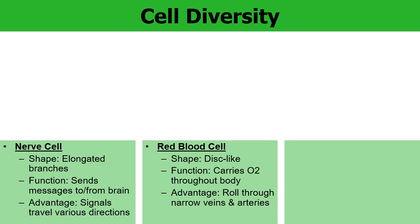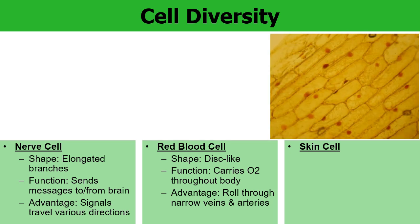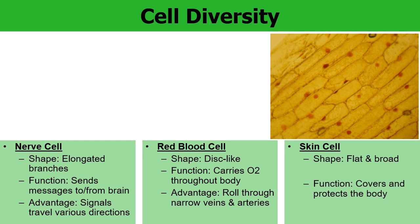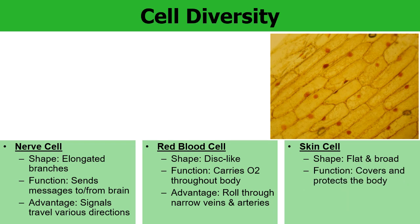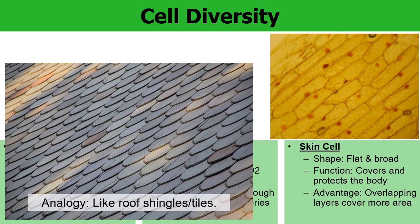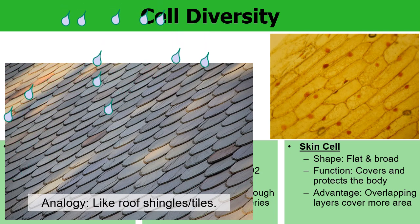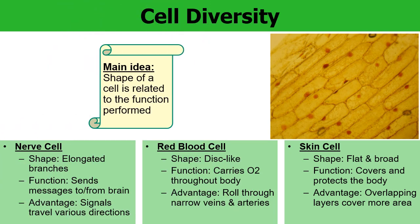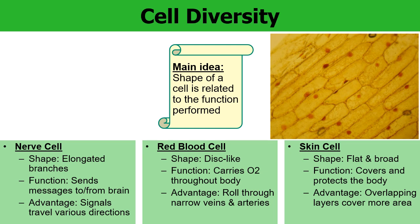Another example of the diversity of cells — here's a skin cell. Skin cells are flat and broad and they cover a lot of area. You think about the function of skin cells, which is to cover and protect the body, keep things out that need to stay out, keep things in that need to stay in. An advantage of the skin cells being broad and flat is they overlap and cover more area to achieve their purpose. An analogy would be like roof shingles — when it rains, the water just slides down the roof tiles and keeps the elements outside of your house.